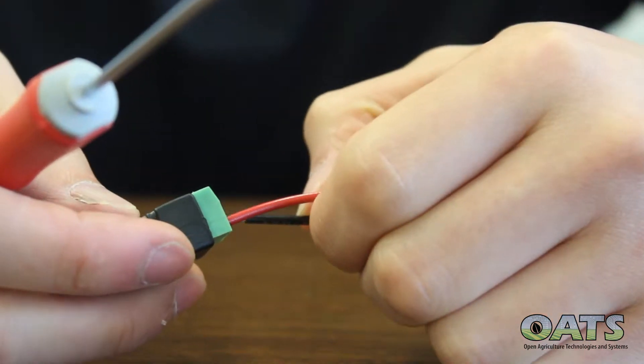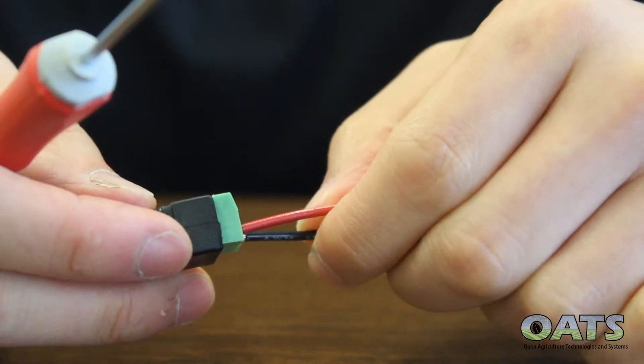And now you can screw down the barrel connectors onto the power and ground wires.